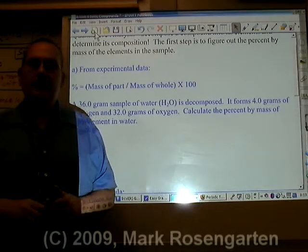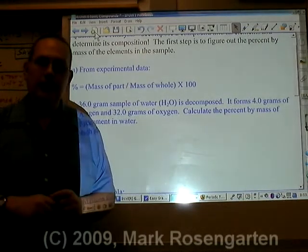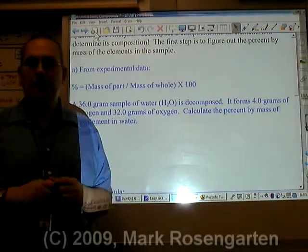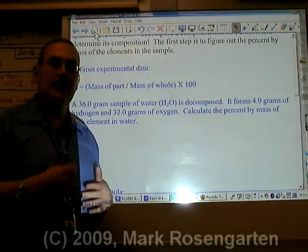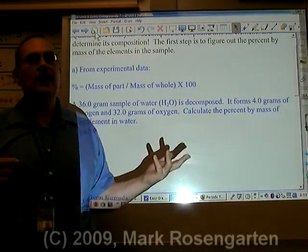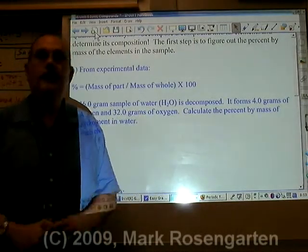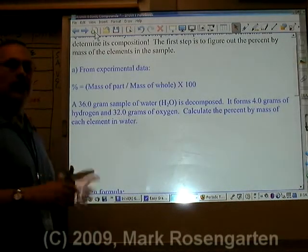Percent composition by mass: if you want to find out what the percent of something is, you take the part that you're interested in and divide it by the whole that the part is part of, then multiply by 100, because percent means per hundred or out of a hundred. For example, if 75 people out of 100 are wearing sneakers, 75% of them are wearing sneakers.